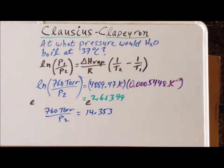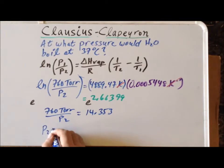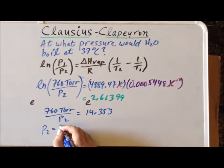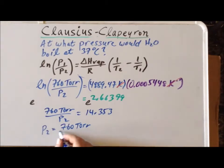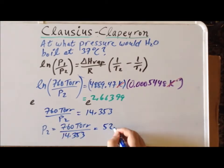Now we can rearrange the equation, multiply both sides by P2 and divide each side by 14.353. And that gives us that P2 is equal to 760 torr divided by 14.353, which gives us a pressure of 52.95 torr.